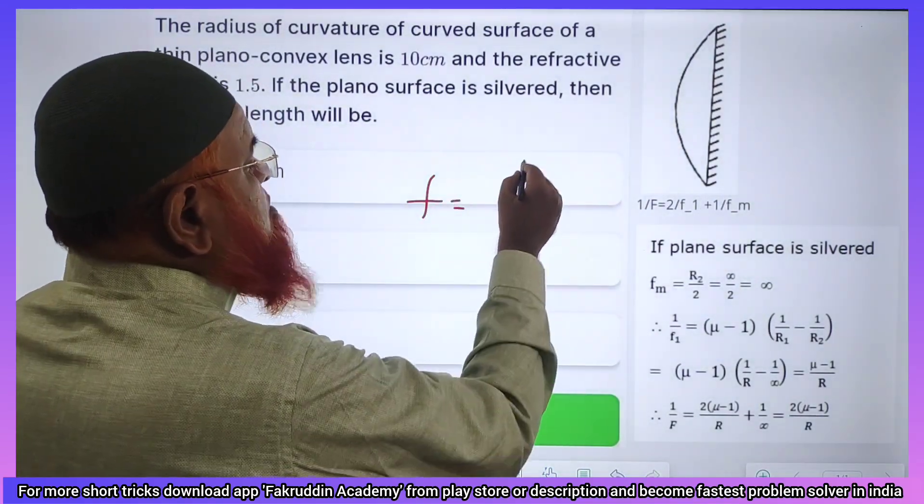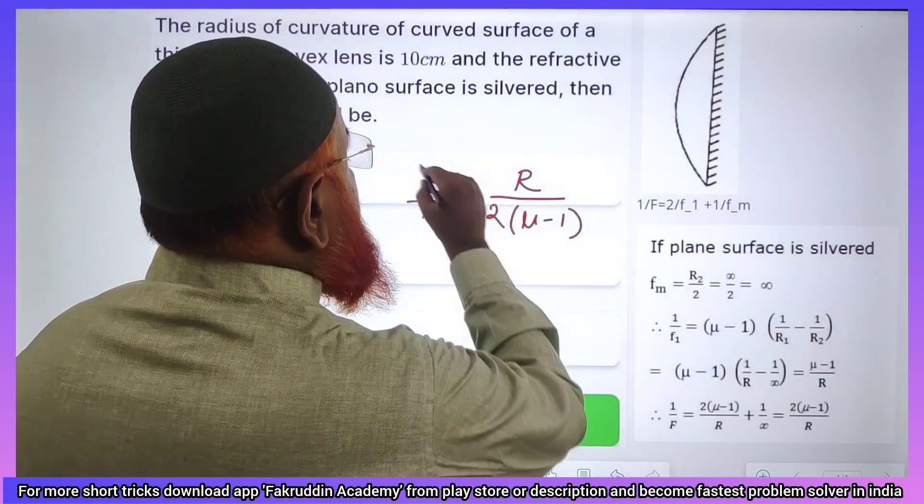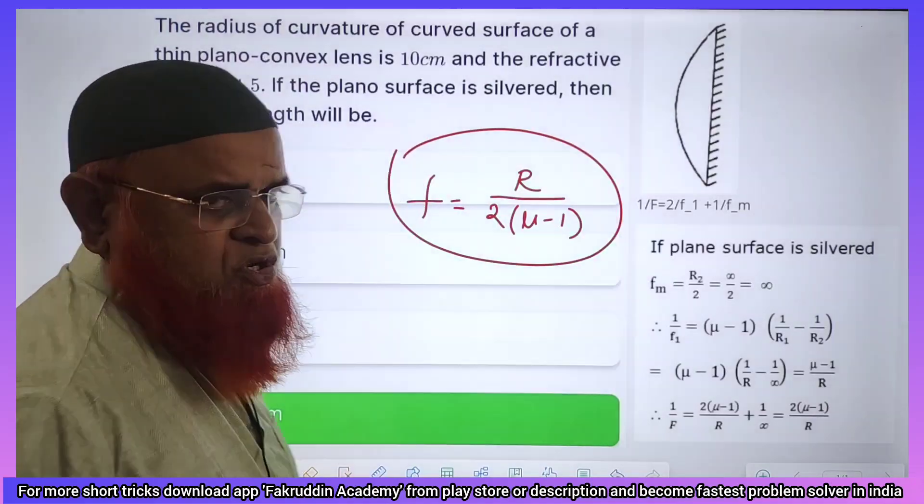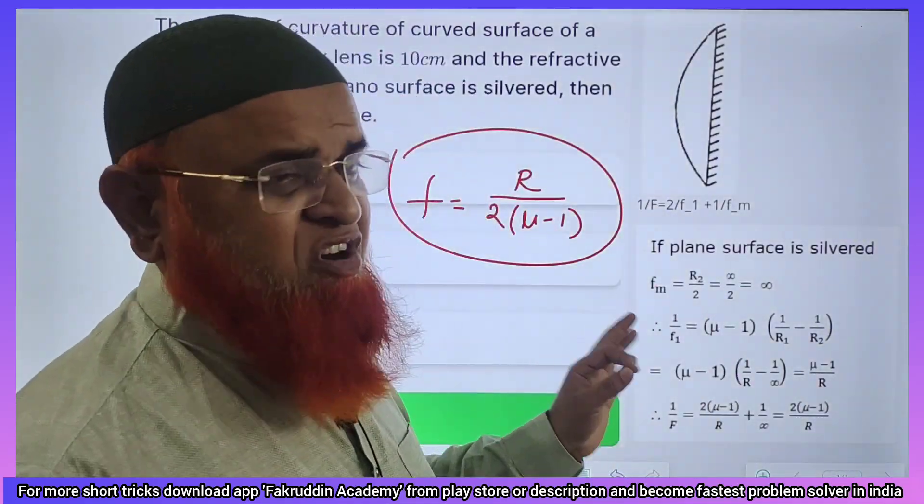The simple shortcut is you can find the focal length by using the formula that is R by 2 into mu minus 1. This is going to be your shortcut formula.